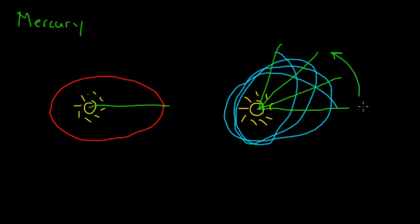According to general relativity, the rate that this precesses at should be about 0.012 degrees per century. If you actually do the measurements of Mercury's position around the Sun over the course of a few years, taking into account all of the little tugs that all the other planets give to it and all of those other effects, the last part that you get is this 0.012 degree per century precession of the perihelion in exact match with what general relativity says.